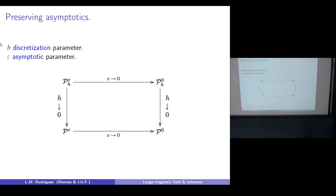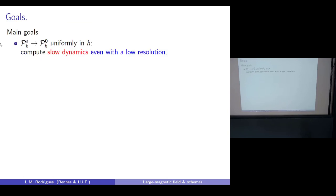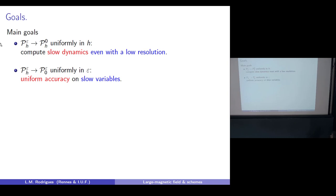We are in a situation where we have a small parameter epsilon, we understand what happens when epsilon goes to zero at the continuous level, and we want to compute solutions numerically. This introduces discretization parameters, and for uniformity you need the two limits — epsilon to zero and mesh size to zero — to commute. We want to compute the slow dynamics even when the meshes are too coarse to capture the fastest oscillations. Another way to say it: you want good accuracy on the slow variables without a stiffness constraint.